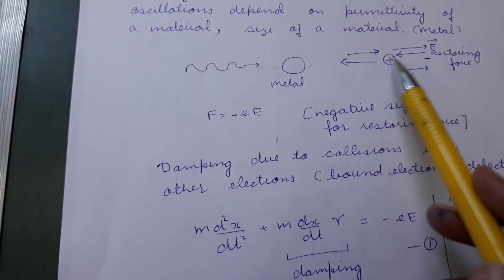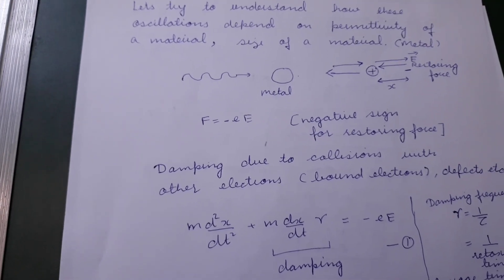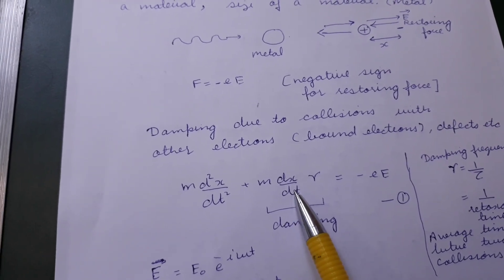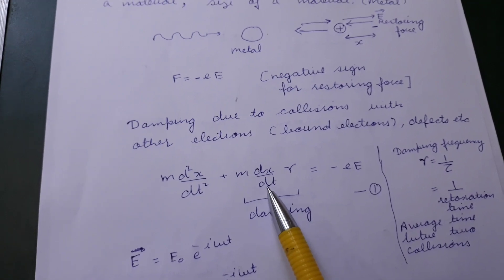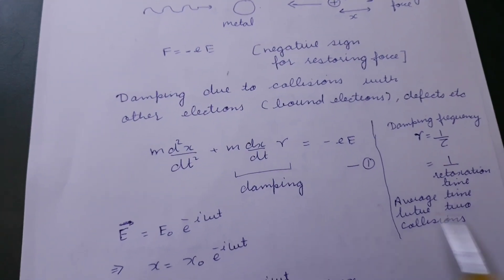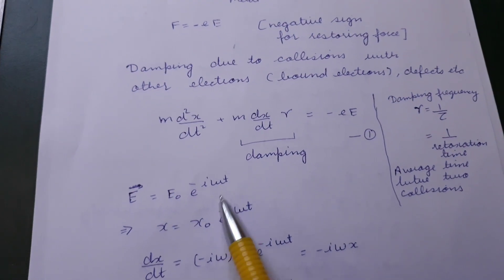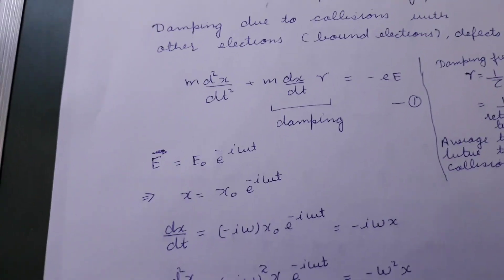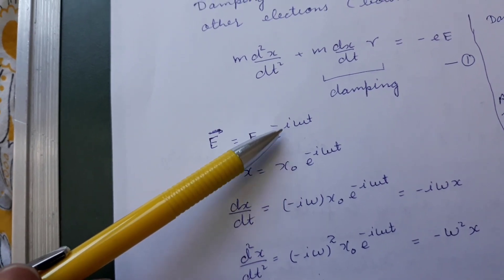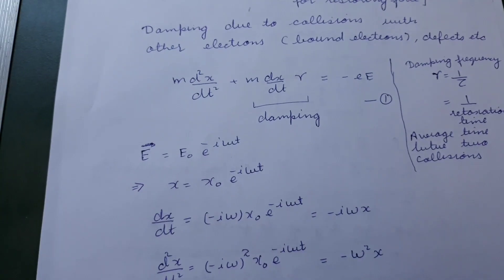Also, when these electrons are oscillating, they may lose energy by colliding with other electrons and defects, so we need to add a damping term which depends upon the velocity. Therefore, the equation of motion will include this additional damping term. We are applying an oscillating electric field of the form e^(-iωt). The damping term gamma is called the damping frequency.